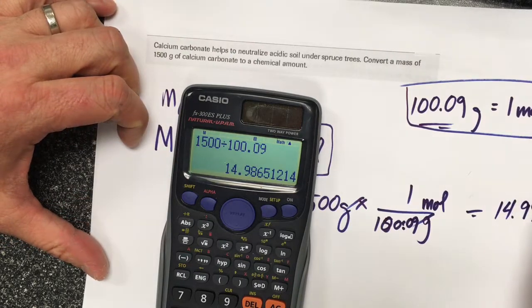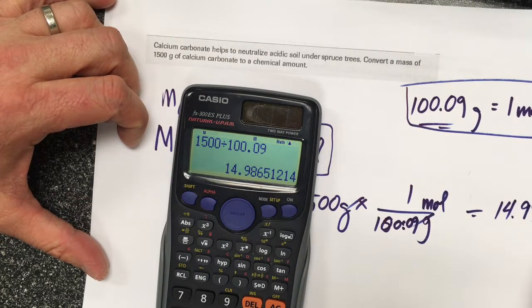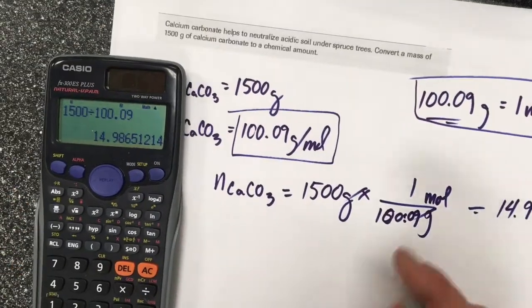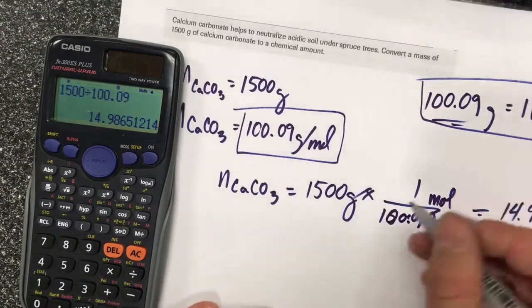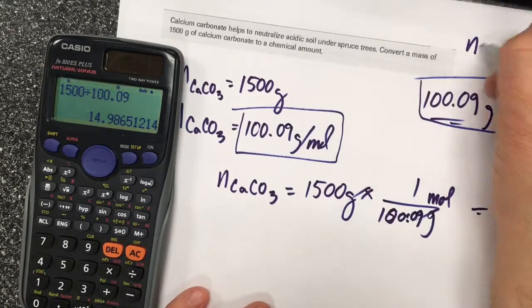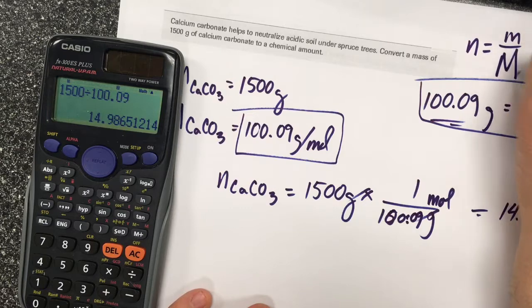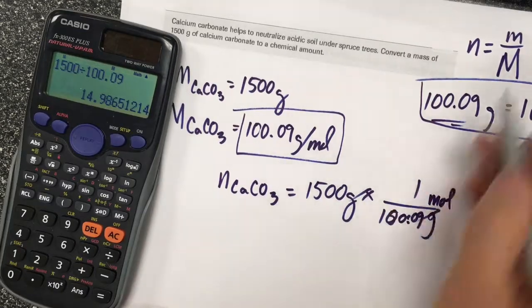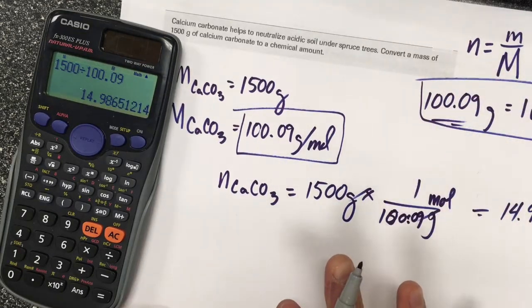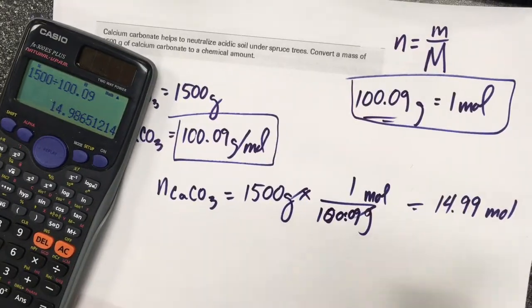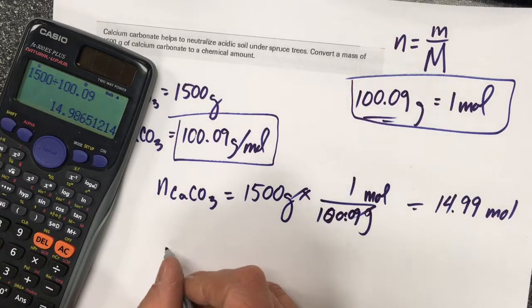There's also a formula where n, the chemical amount, equals the mass over the molar mass (n = m/M). This formula will also yield the same answer - it's essentially the same kind of math we're looking at here.